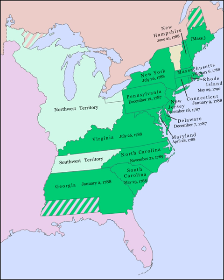In 1787 and 1788, following the Constitutional Convention, a great debate took place throughout the United States over the Constitution that had been proposed. The supporters of the Constitution began the ratification campaign in those states where there was little or no controversy, postponing until later the more difficult ones. On July 21, 1788, New Hampshire became the ninth state to ratify the Constitution, thus establishing it as the new framework of governance for the United States.